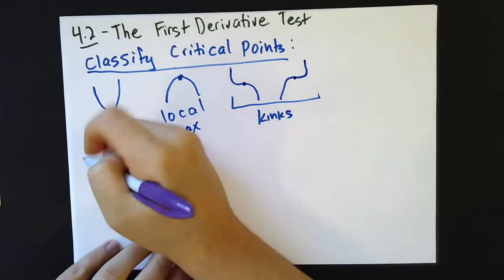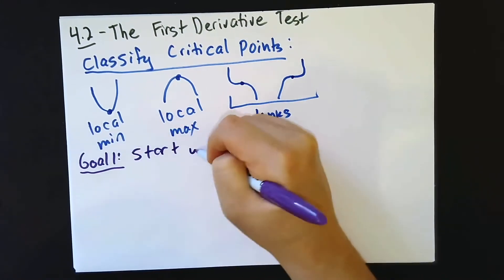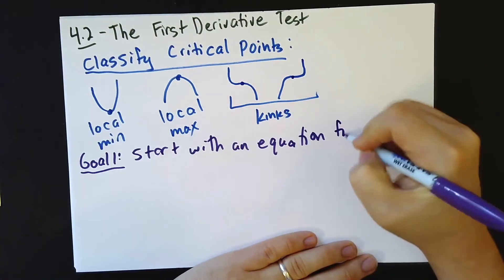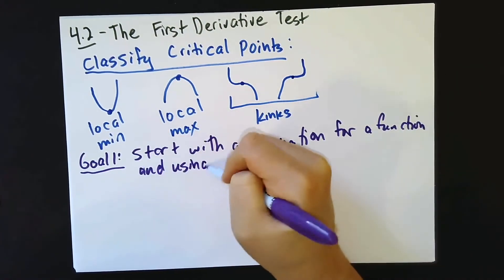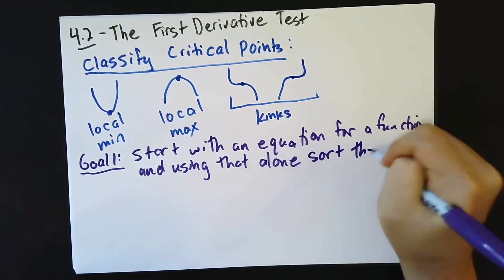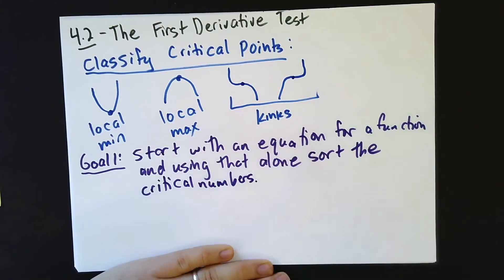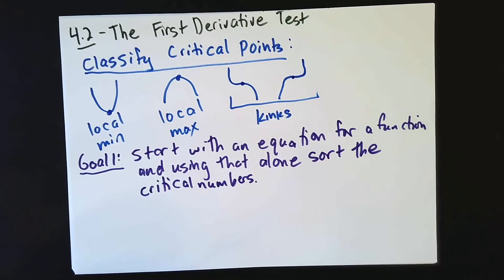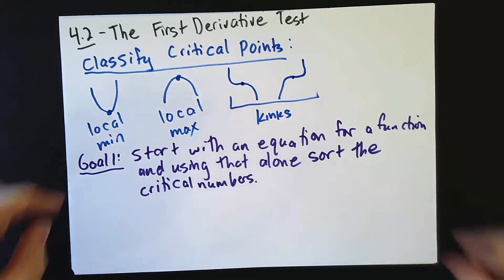What we'd like to be able to do with the first derivative test is take just an equation for a function, find the critical points, and decide which of these it is. So we'd like to start with an equation and say the critical numbers are 3, 9, and negative 5 — where 3 and 9 are local mins, and negative 5 is a kink. That's our first goal.